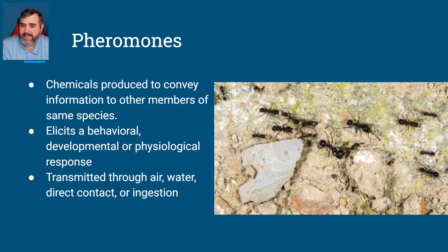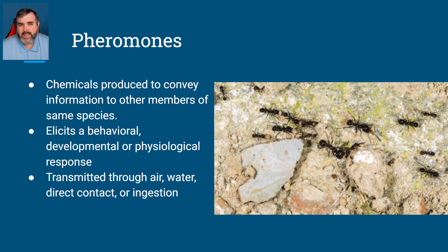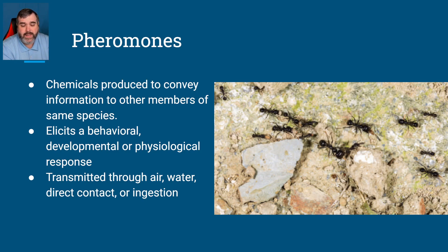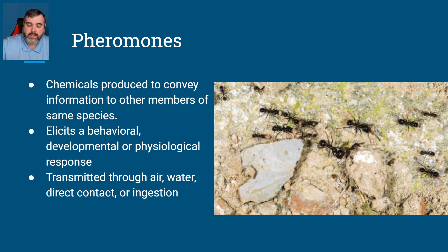We've already talked about this to some extent, but remember a pheromone is a chemical produced by an organism that conveys information to other members, usually of the same species — they're usually conspecific. This is different from a hormone. A hormone gets produced in your body, in a gland like the pituitary or adrenal gland, and travels to another part of your body to get a response. Hormones are within the body; pheromones go from one individual to another.